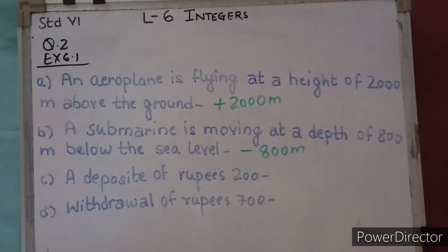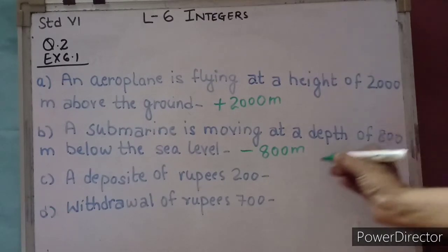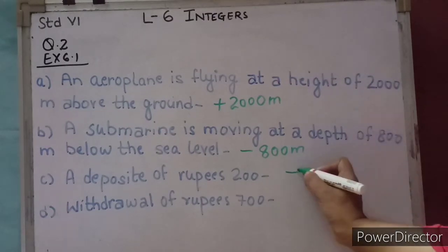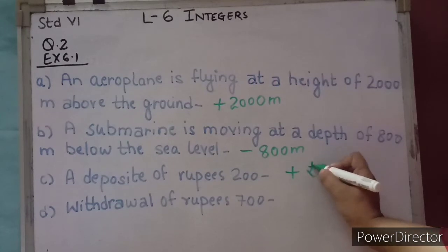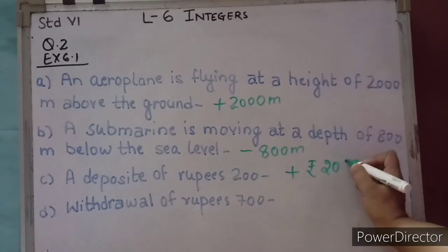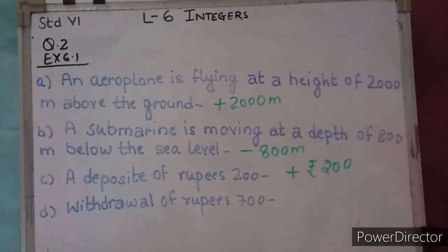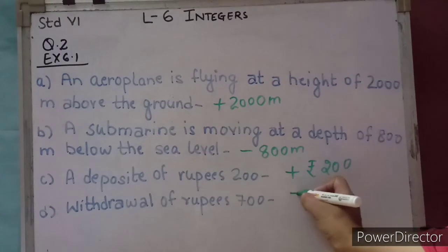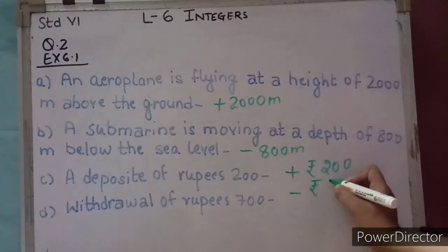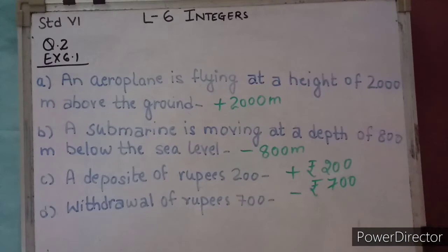A deposit of rupees 200 — deposit means adding, so it is plus rupees 200. Withdrawal of rupees 700 — withdrawal means subtraction, taking out, so it becomes minus rupees 700. Hope you understand it.